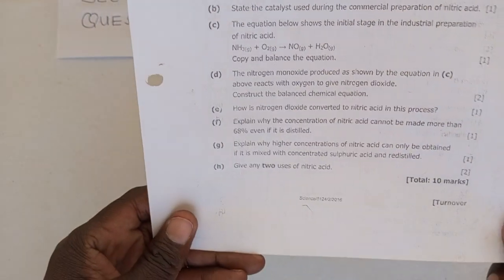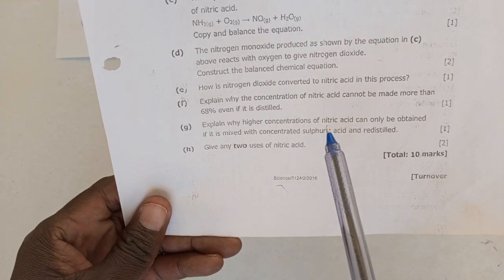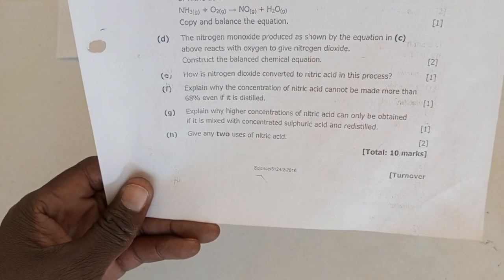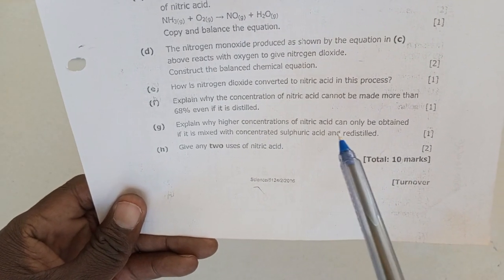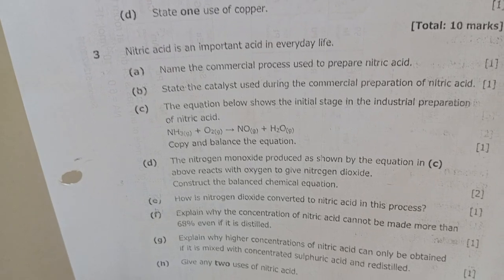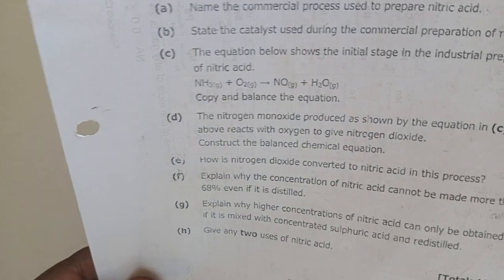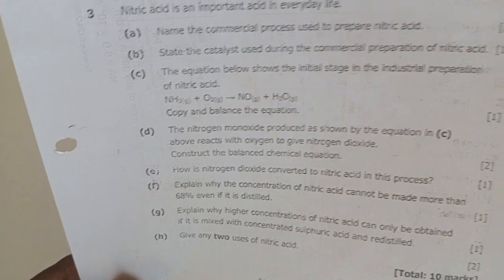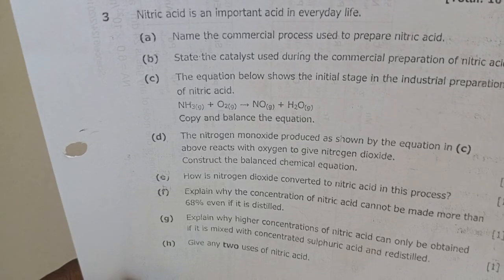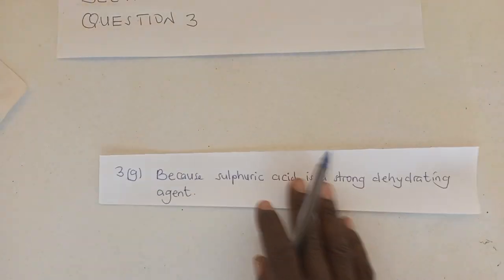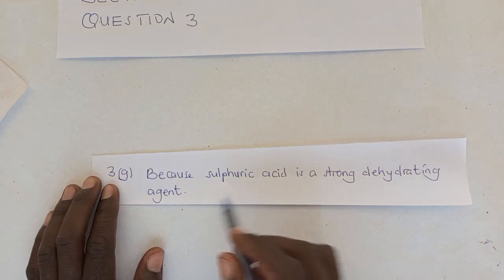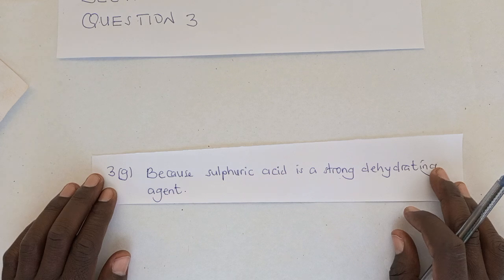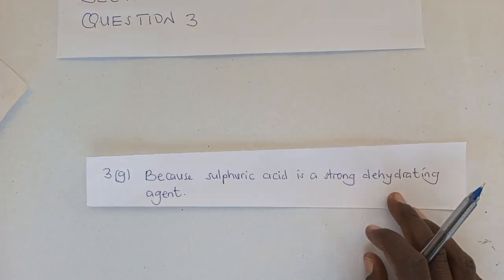We move on to the next question, which is question G. Explain why higher concentrations of nitric acid can only be obtained if it is mixed with concentrated sulfuric acid. Now, if there is no sulfuric acid, remember we said that you can also use magnesium nitrate. So why is it that higher concentration can only be obtained if the mixture is mixed with concentrated sulfuric acid? And the answer to that is because sulfuric acid or magnesium nitrate is a strong dehydrating agent. So that is basically the answer to that question.